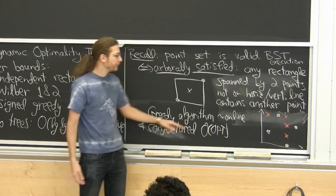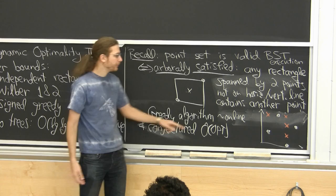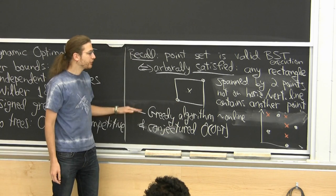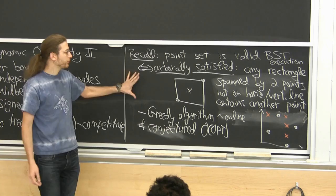On the upper bound side, we saw a greedy algorithm — the obvious offline thing to do. As accesses come along (the white dots), you add the necessary red dots to make it arbitrarily satisfied, row by row. It turns out this can be done online up to constant factors. And this is conjectured to be within a constant factor of optimal — we can't prove it.